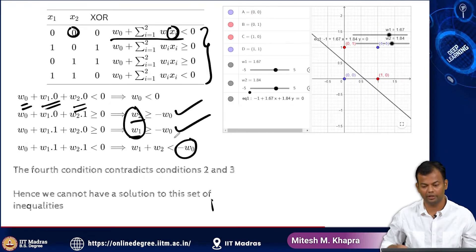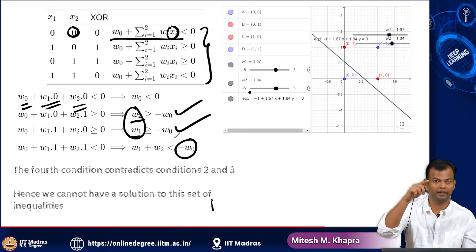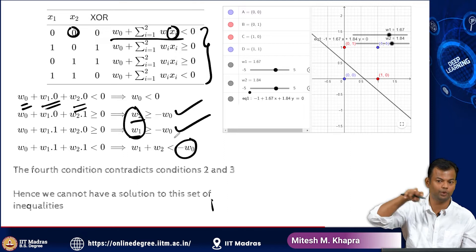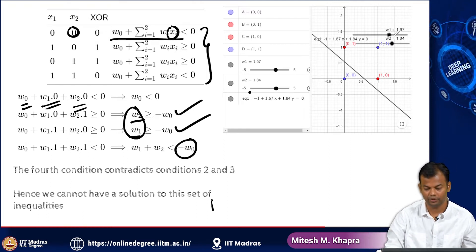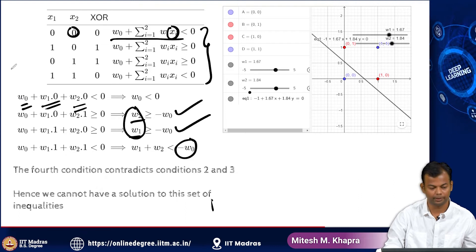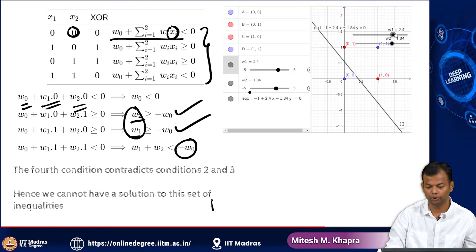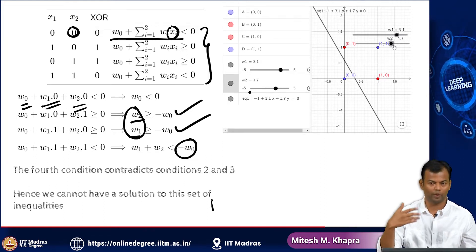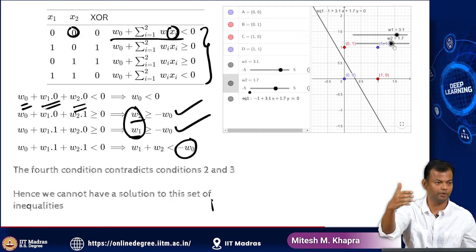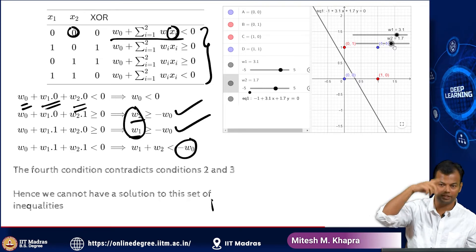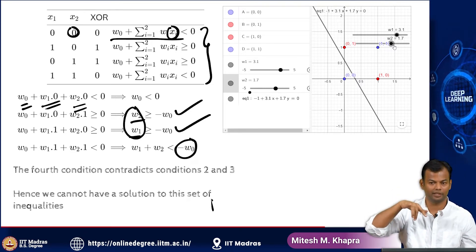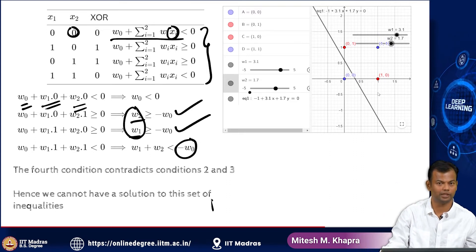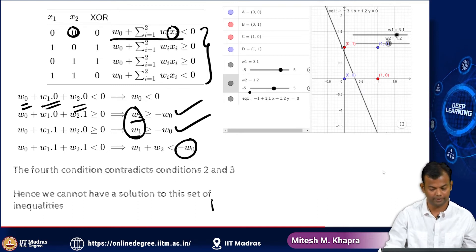We can see this from the diagram. Here are the 4 points: 2 negative points sitting at 0,1 and 1,0 and 2 positive points sitting at 0,0 and 1,1. You can try to adjust weights W_1 and W_2 as much as you want, but you will not be able to draw a line such that the 2 positive points are on one side and the 2 negative points are on the other. You cannot draw such a line — it is clear both from the figure and from the set of inequalities.